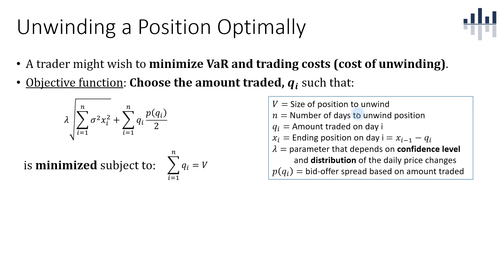V is the position that you want to unwind — for example, how many shares — and N is the number of days to unwind. Q sub i is the amount traded on day i, and x sub i is the ending position on day i, taken as the previous day's ending position minus the trades on day i. Lambda is a parameter depending on the confidence level and distribution of daily price changes, and p, a function of q, is the bid-offer spread. In general, the larger the trade position, the larger the bid-offer spread, which affects the cost of liquidation.